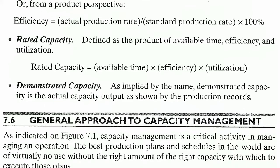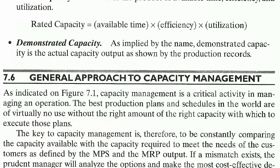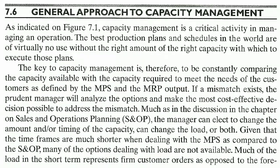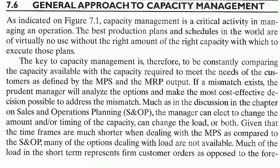Demonstrated capacity, as implied by the name, is the actual capacity output as shown by the production records. The last topic of this chapter is the general approach to capacity management. As indicated on figure 7.1, capacity management is a critical activity in managing an operation. The best production plans in the world are of virtually no use without the right amount of the right capacity.